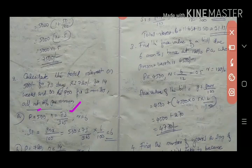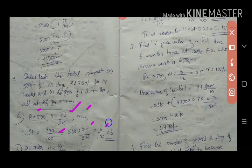The principal amount is 500 and the rate of interest is 6 percent, which is the same in all three cases. Applying the formula PNR divided by 100: 500 × (73/365) × 6 / 100 gives us rupees 6 as the answer for the first amount.